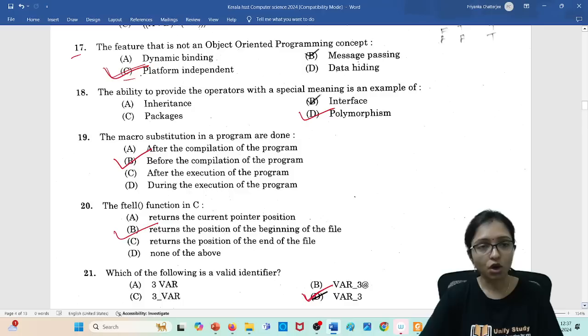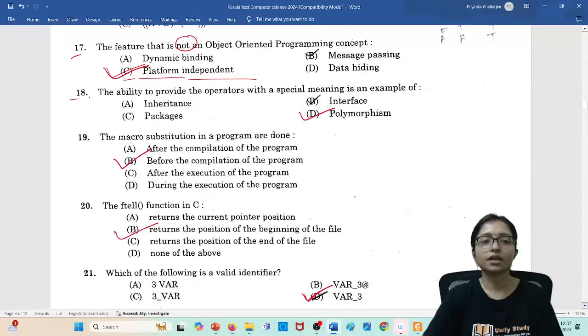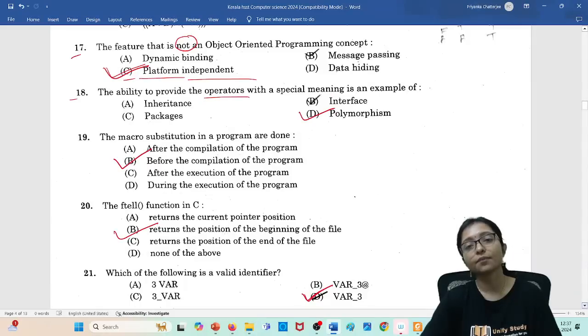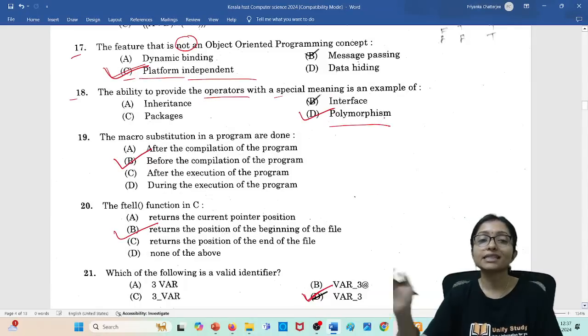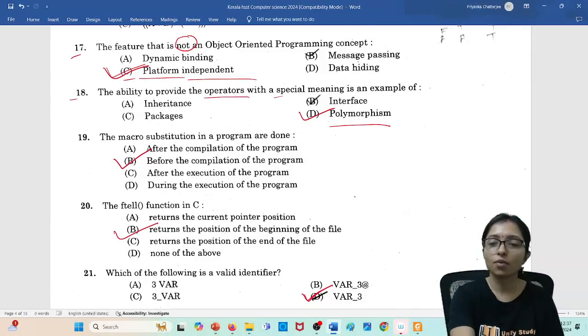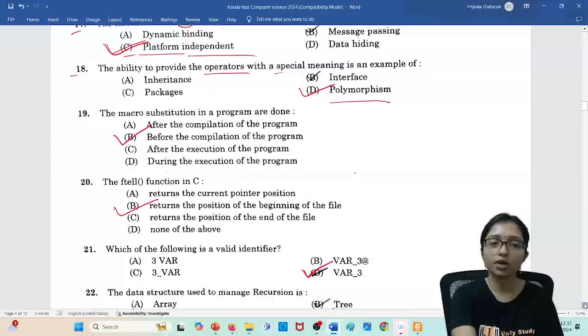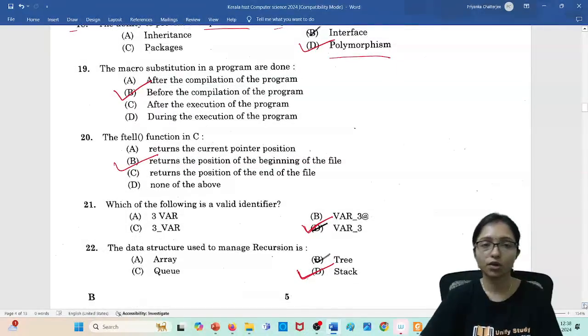Question number 17: the answer should be option C, object-oriented platform, which is not the concept that is platform independent. It is not at all platform independent. Question number 18: the ability to provide the operator with special meaning, that is polymorphism. It is actually operator overloading. Operator overloading is one type of polymorphism, so answer should be polymorphism.